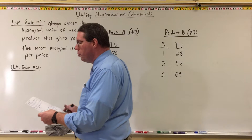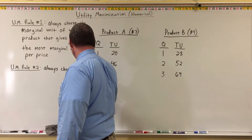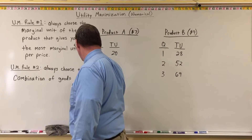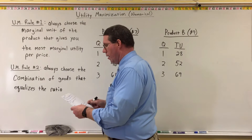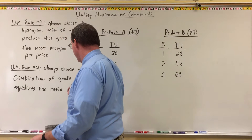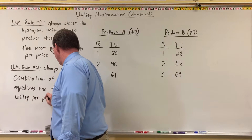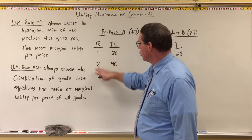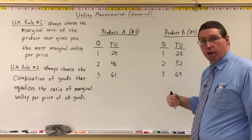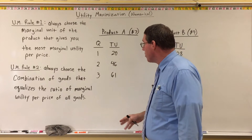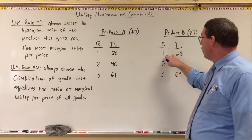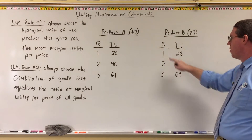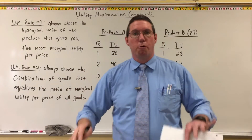Utility maximization rule number two is: always choose the combination of goods that equalizes the ratio of marginal utility per price for all goods. Basically, when you're done deciding how much of product A and product B to buy, you want the marginal utility per price for each product to be roughly equal. If you choose two of product A and one of product B, it's because the marginal utility per price of the second unit of A is about equal to the marginal utility per price of the first unit of B.